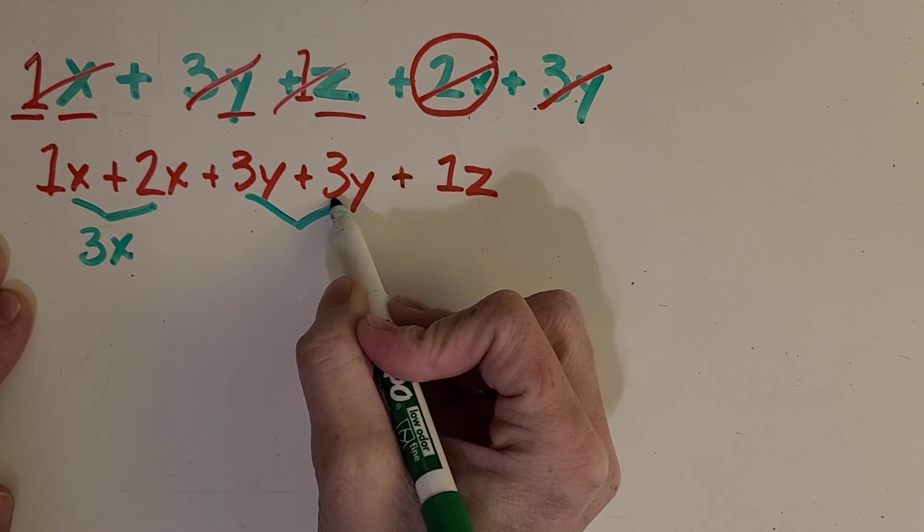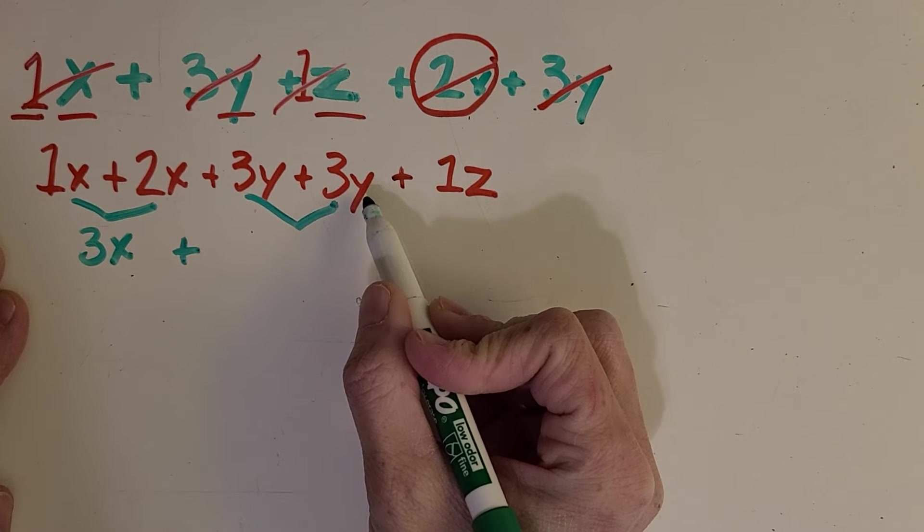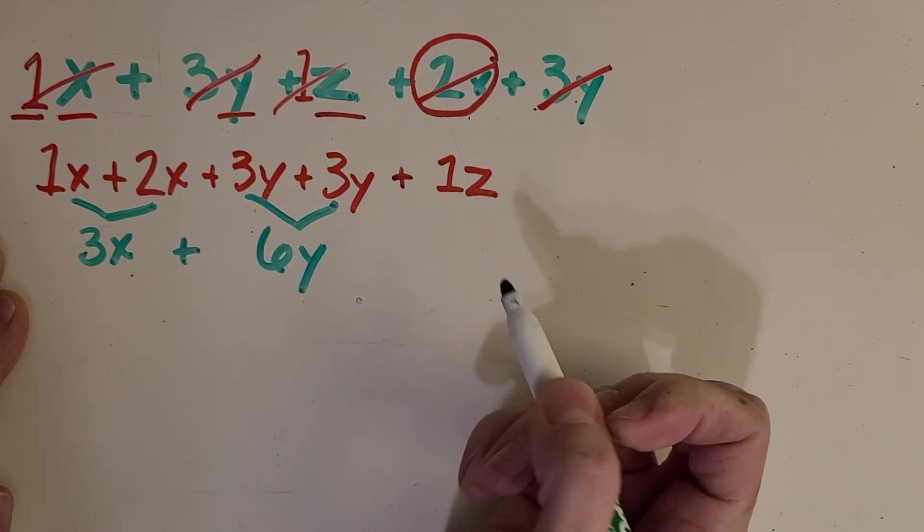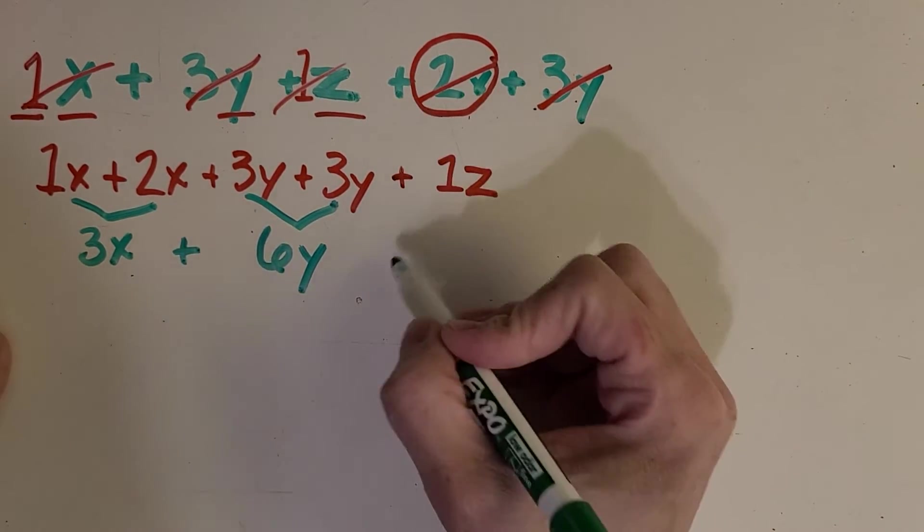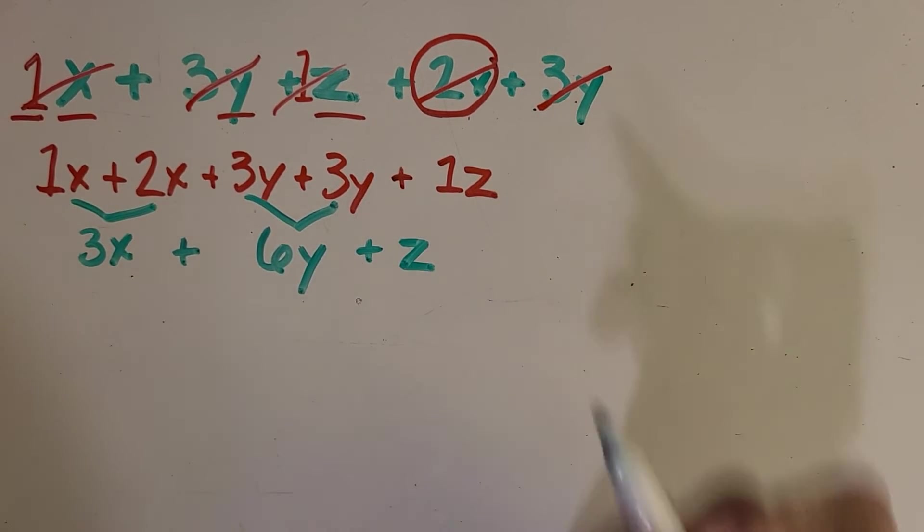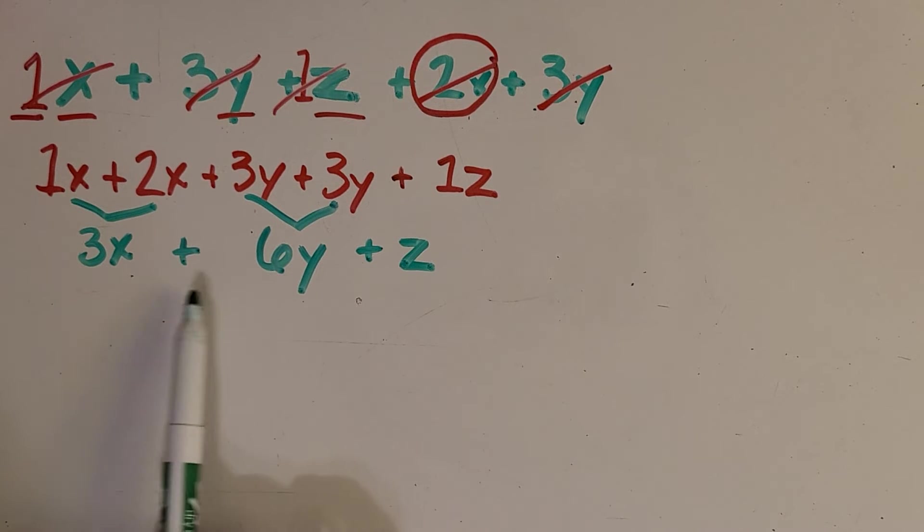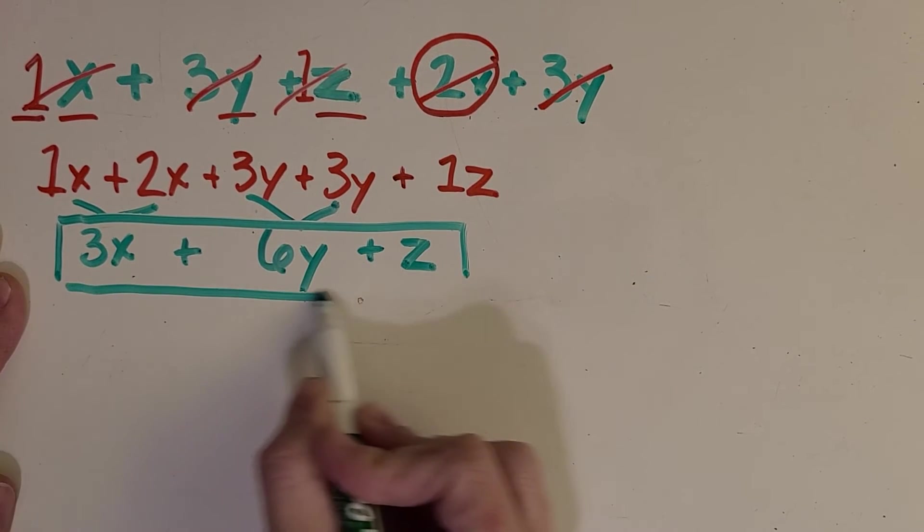And then these two are like terms, they both have a y. So what about that one? Okay, you got it, 6y. And then this z, I don't see another thing to combine with it, so I am just going to leave it alone and put it as just z, because we don't need that one as a coefficient, it just is something that could help. Okay, can we combine anything else? Okay, no we can't, they all have a different variable. So now we have simplified it as much as we can, and there we go.